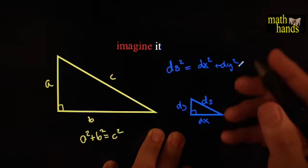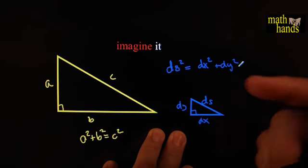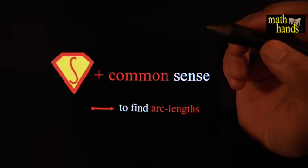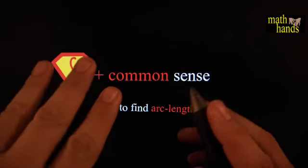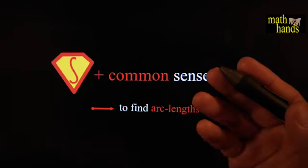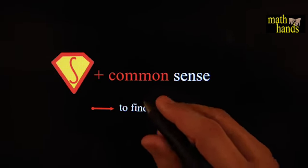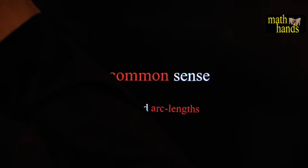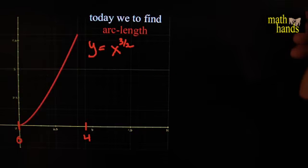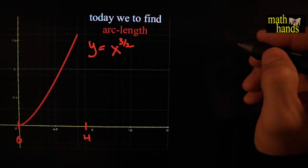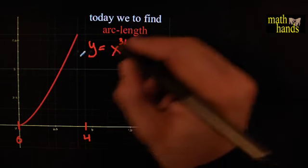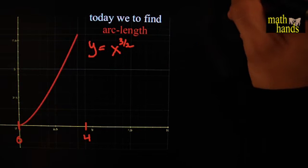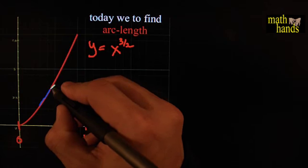What we want to do is exploit exactly this idea — that's it, there's nothing else new. All you need is common sense to find arc lengths. The lecture is pretty much over except for a few examples. Let's start off with a plain, easy, standard example — almost obligatory because all textbooks do this one.